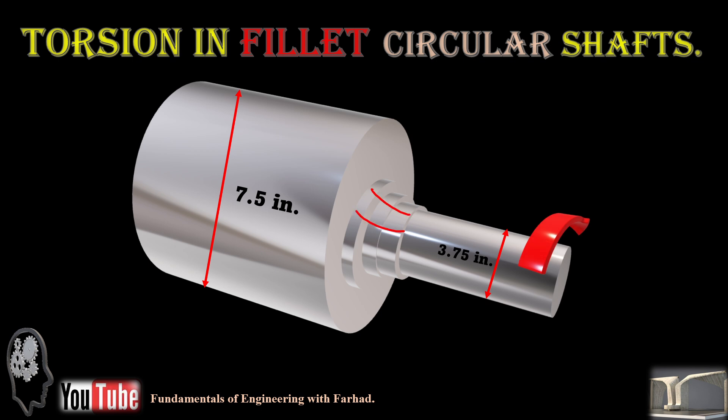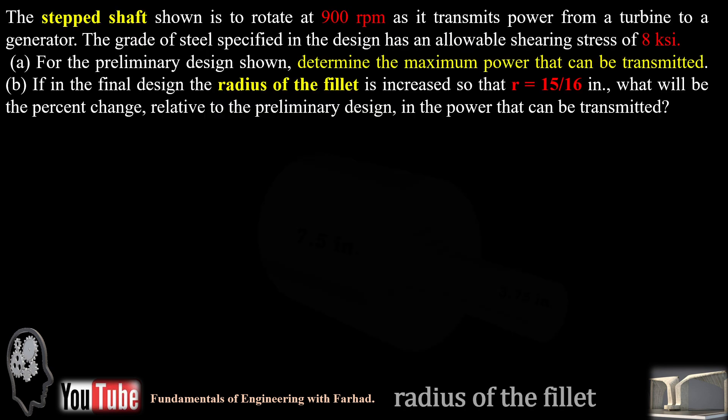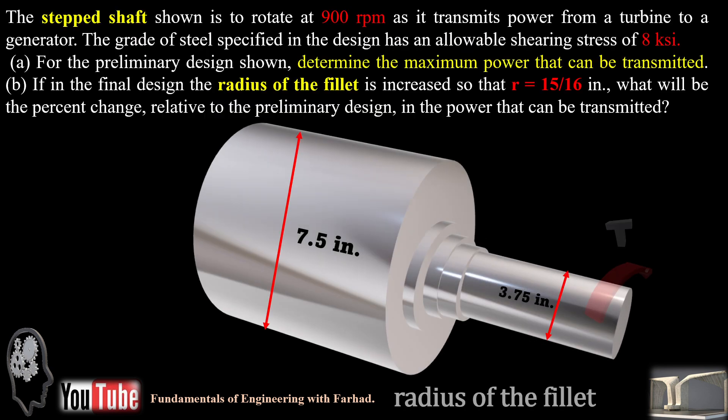we have a stepped circular shaft with a radius of fillet of 9 over 16 inches. The stepped shaft provided is rotating at 900 rpm to transmit power from a turbine to a generator.